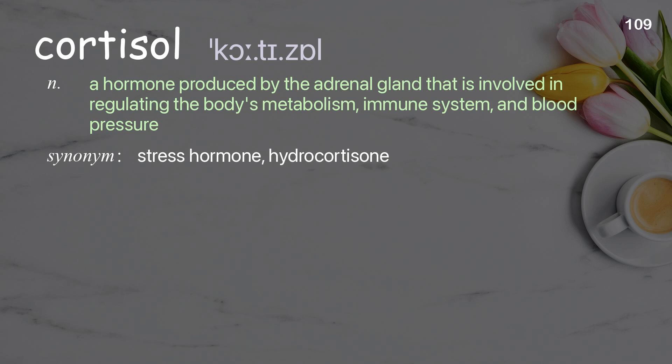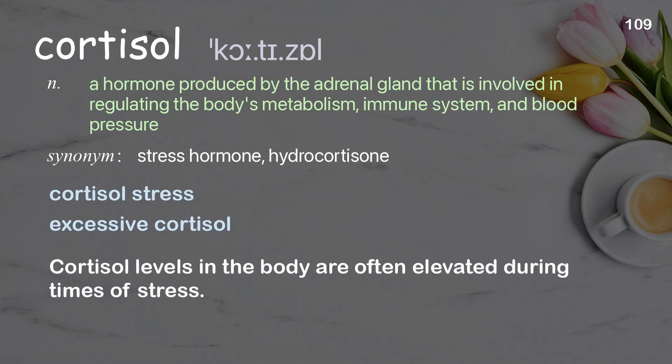Cortisol: A hormone produced by the adrenal gland that is involved in regulating the body's metabolism, immune system, and blood pressure. Examples: Cortisol stress. Excessive cortisol. Cortisol levels in the body are often elevated during times of stress.